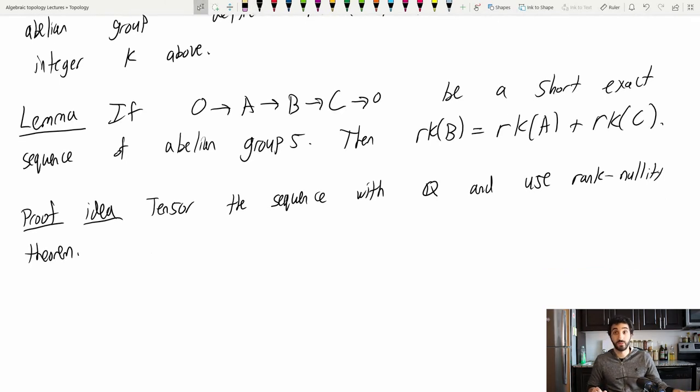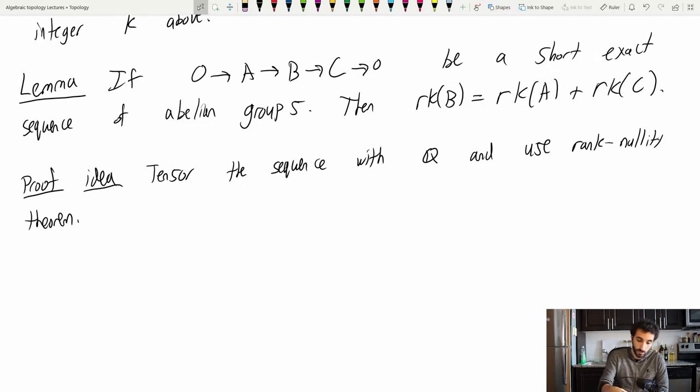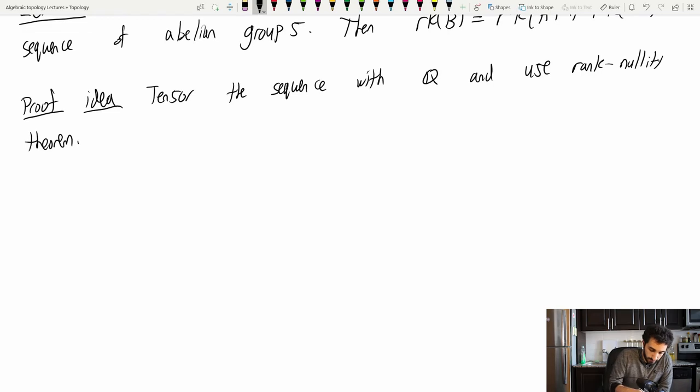And then I have a short exact sequence of vector spaces. And then you can use rank nullity. So that's the idea of it. If you want to work out the details, you can, but I'll skip them for now.